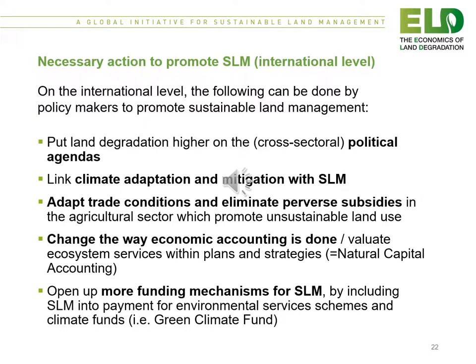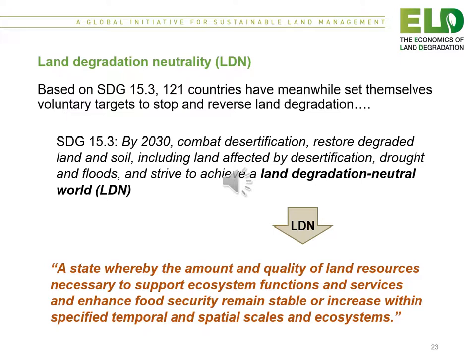At the international level there are efforts to achieve land degradation neutrality, based on Sustainable Development Goal 15.3. Over 120 countries have set voluntary targets to stop and reverse land degradation. SDG 15.3 states that by 2030 we will combat desertification, restore degraded land and soil including land affected by desertification, drought and floods, and strive to achieve a land degradation neutral world. The definition of land degradation neutrality is a state whereby the amount and quality of land resources necessary to support ecosystem functions and services and enhance food security remain stable or increase within specified temporal and spatial scales and ecosystems.